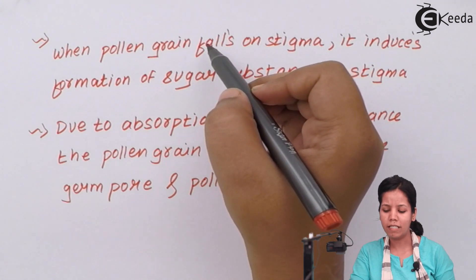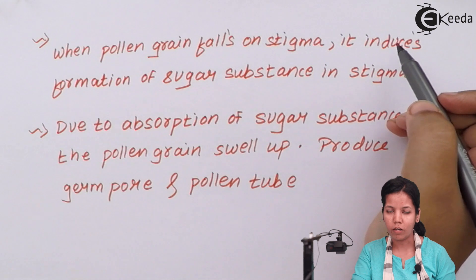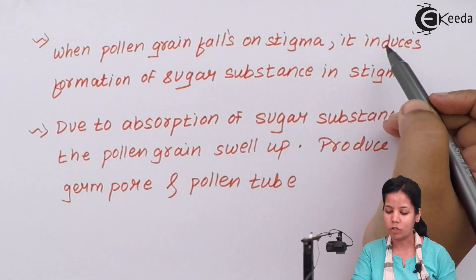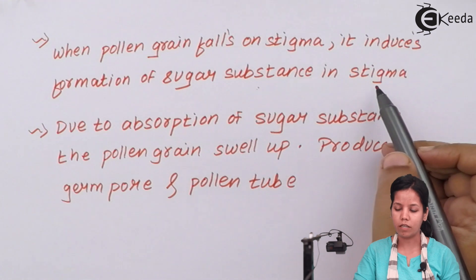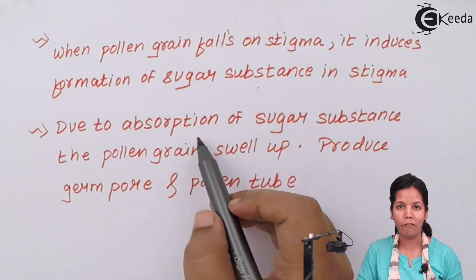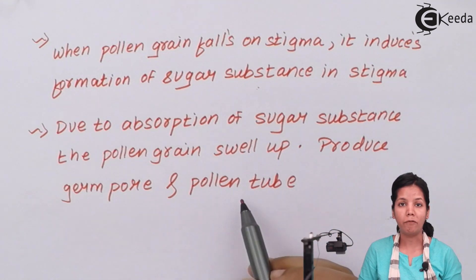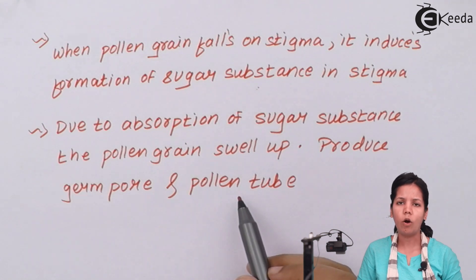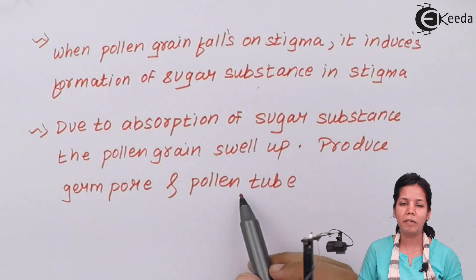The process of pollen-pistil interaction basically starts when pollen grains land on the stigma. This landing of pollen grains on the stigma during fertilization induces the formation of a sugary or waxy-like substance near the stigma. Due to the absorption of this sugary substance, the intine and exine — both the coverings of pollen grains — swell up and produce the germ pore and pollen tube, which are the passages through which both male gametophytes travel into the egg apparatus for further fertilization.